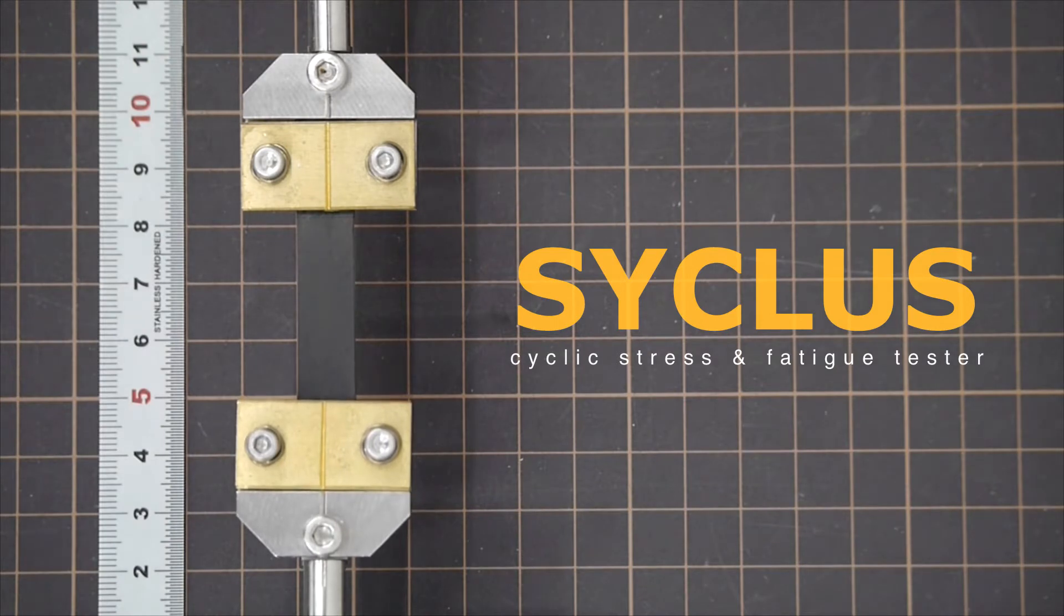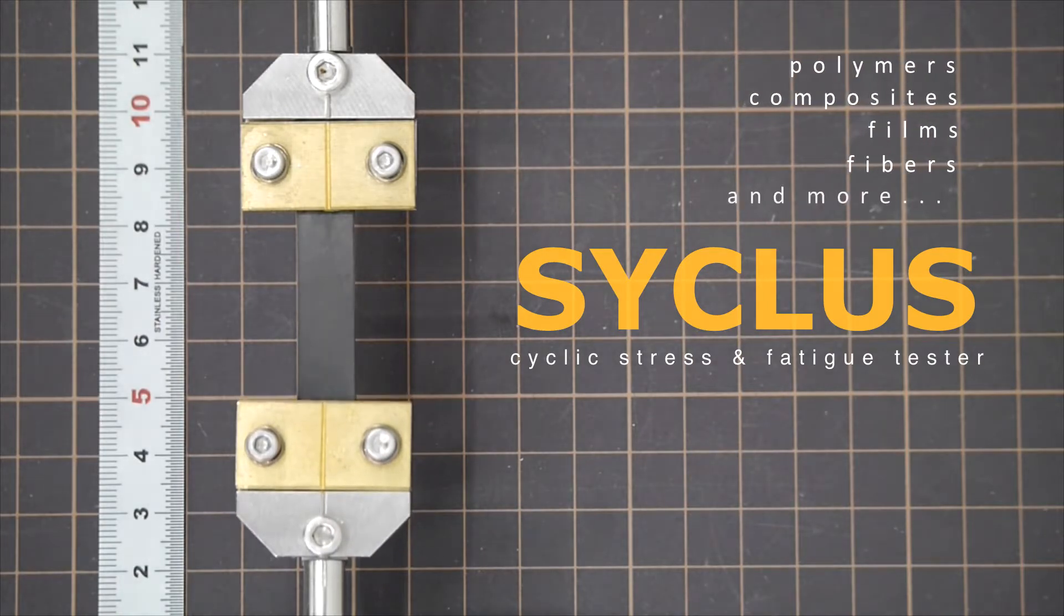Cyclos from AcroEdge is a compact and lightweight fatigue tester for a wide range of materials like polymers, composites, films, fibers, and more.